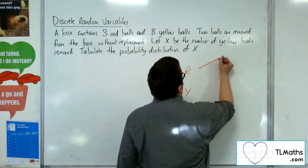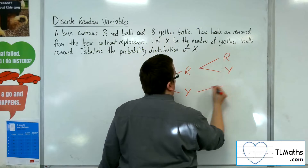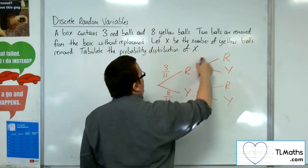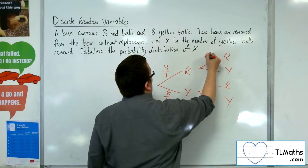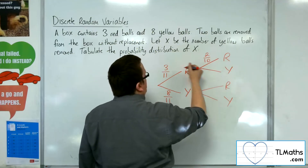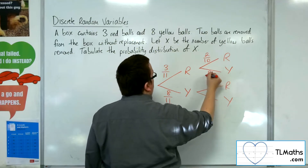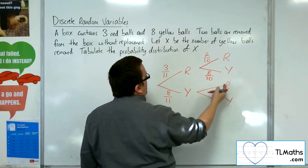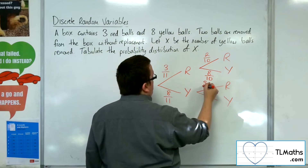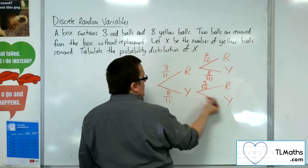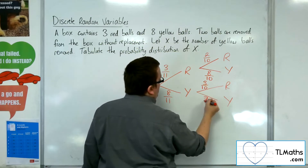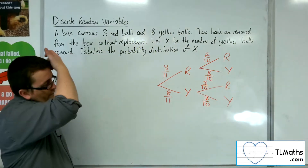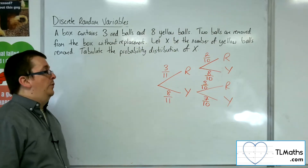For the second choice, because we're not replacing the ball back in the box — if we've picked out a red initially, then we have two out of 10 reds remaining, and for yellow we still have eight but it's now out of 10. If a yellow is picked, we will have three reds still out of 10, but we will now have seven yellows remaining out of the 10 balls.